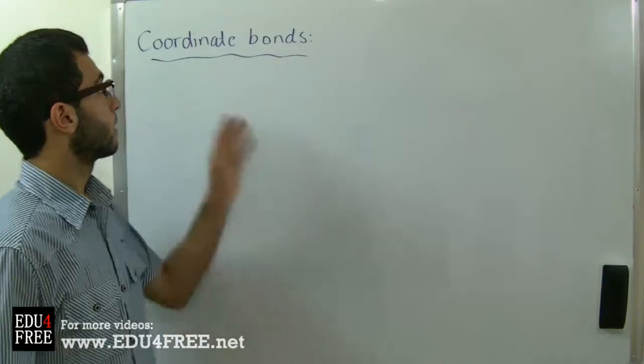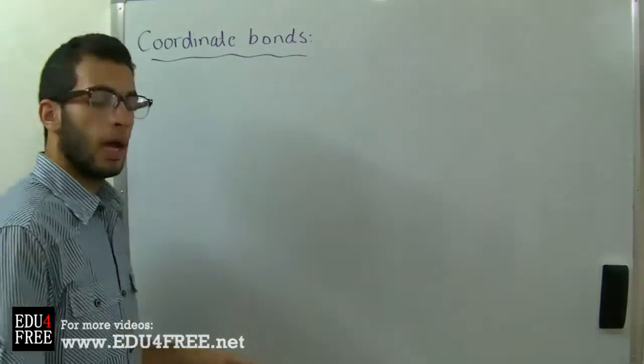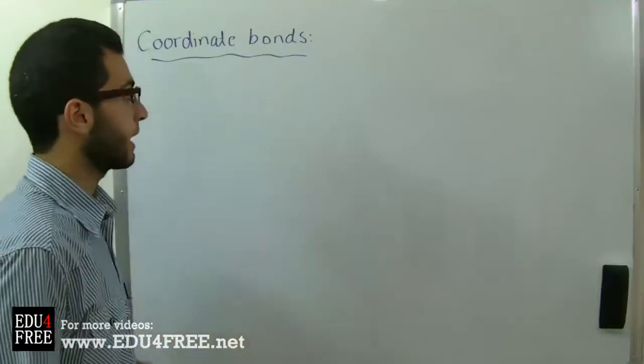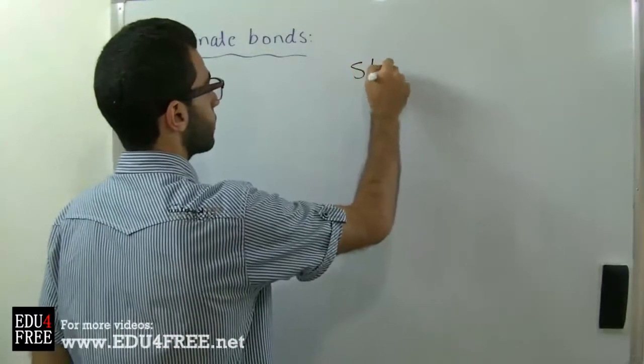Today we are going to talk about coordinate bonds. Previously we talked about covalent bonds, and the concept of covalent bonding is sharing electrons.